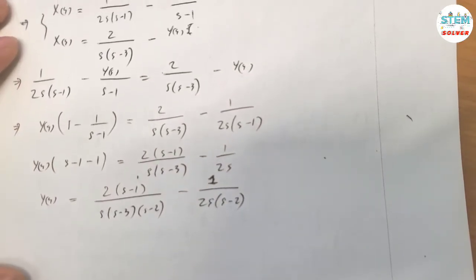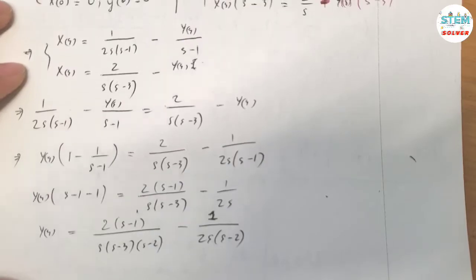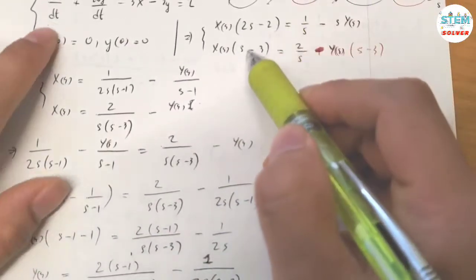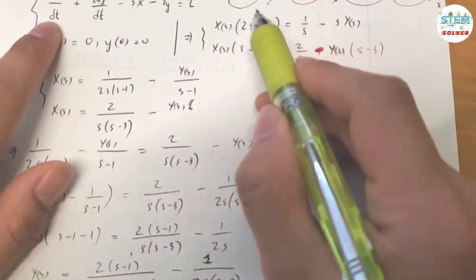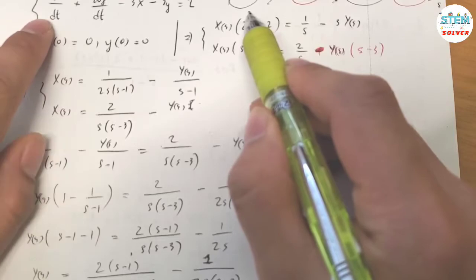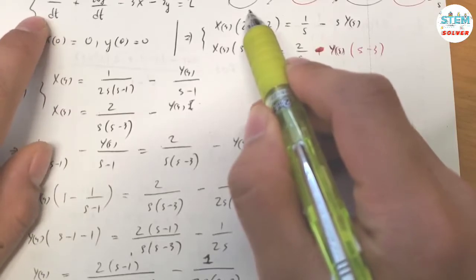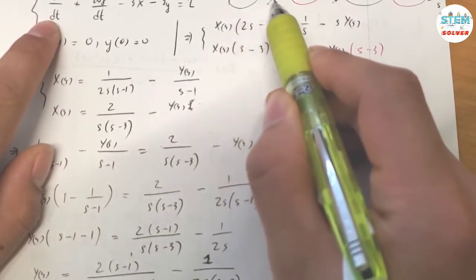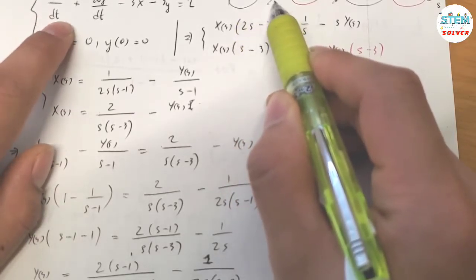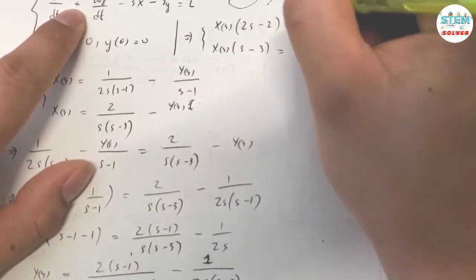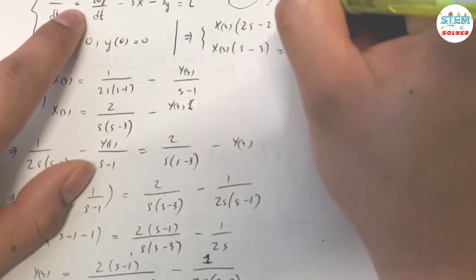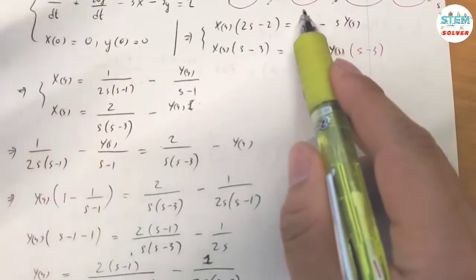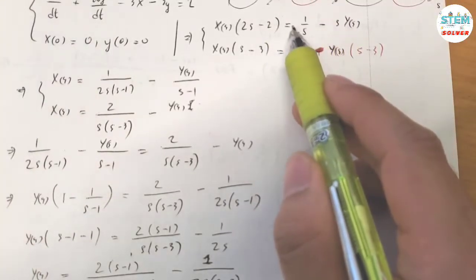Wait — I went really fast and missed something. Let me go back and slow down. When I applied the Laplace transform to the derivative, I should have S·F(S) minus X(0) plus S·Y(S).